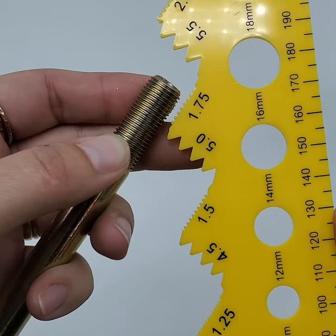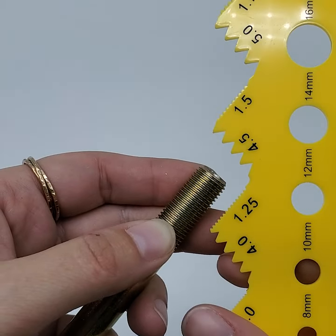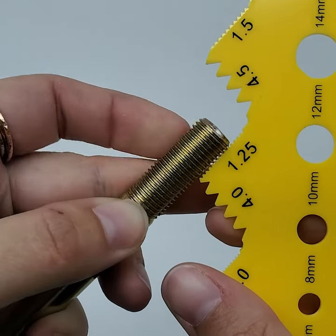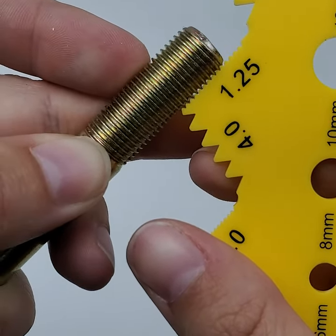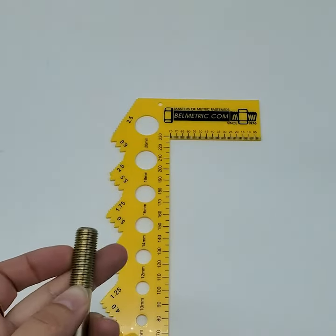Next we're going to do pitch, starting with coarse thread for 12 millimeter, fine thread, and extra fine thread 1.25. So this bolt in total is an M12 by 1.25 by 100 millimeters long.